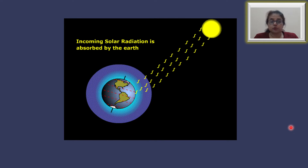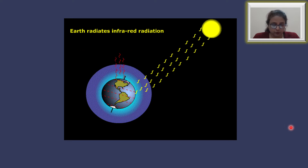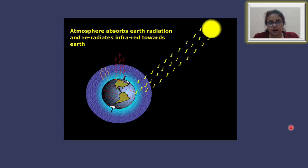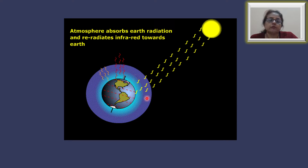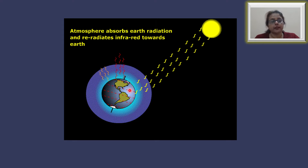We all know that the sun is the ultimate source of heat and light, and the sun is an illuminating mass of extremely hot gases. The sun's energy travels through space to the earth as electromagnetic radiation in the form of short wavelength radiation, passing through the atmosphere. The atmosphere is a very poor conductor of heat — it does not absorb this short wavelength radiation. In fact, the atmosphere absorbs the terrestrial radiation, which is in the form of infrared rays.